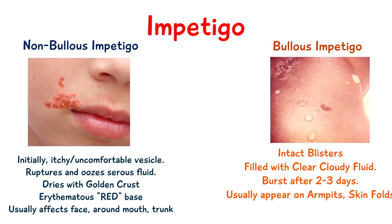The most common sites of infection include the face — commonly around the mouth and nostrils — and the trunk of the body. Bullous impetigo usually affects the armpits and the neck folds.